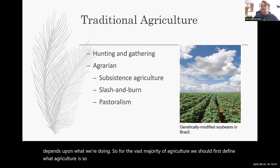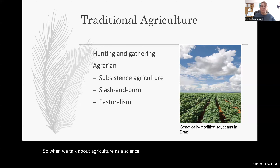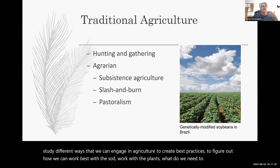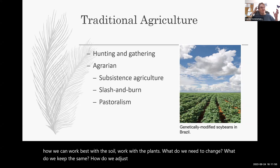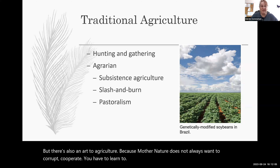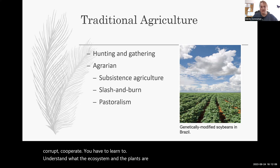Agriculture is a science, it's an art, and it's a business — all of those things simultaneously. When we talk about agriculture as a science, you're at Cal Poly, we're a big ag school. We study different ways to engage in agriculture to create best practices: how we can work best with the soil, work with the plants, what we need to change, what we keep the same, how we adjust to where we're at. But there's also an art to agriculture, because Mother Nature does not always want to cooperate. You have to learn to understand what the ecosystem and plants are trying to tell you.